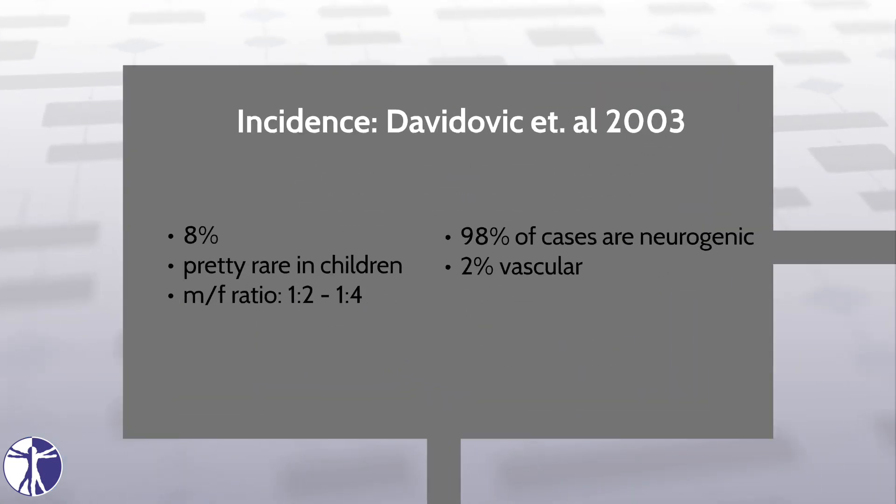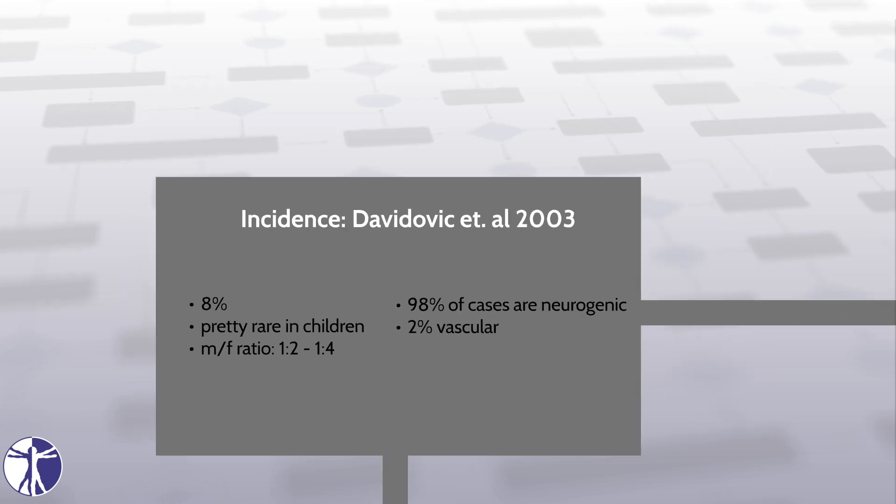According to Davidovich et al. in 2003, the incidence of TOS is as high as 8%. It's a pretty rare condition in children, and the ratio of male to women that have TOS lies between 1 to 2 and 1 to 4. In 98% of the cases, neurological TOS is diagnosed, and only 2% of patients experience vascular TOS.